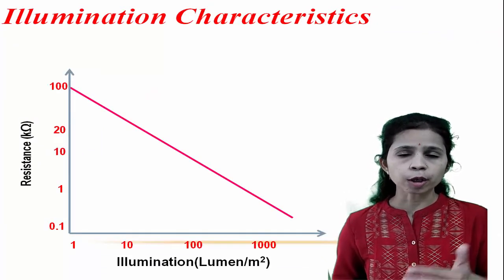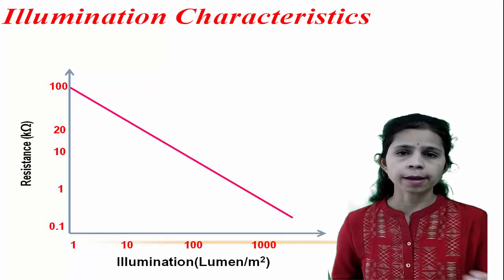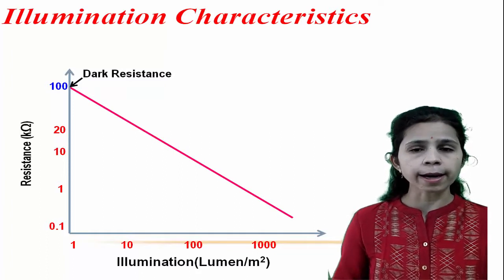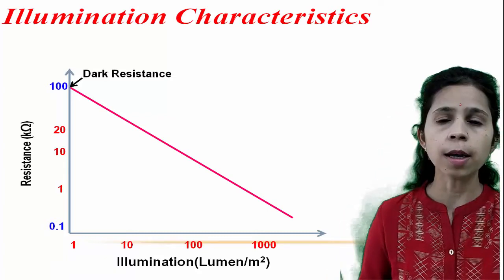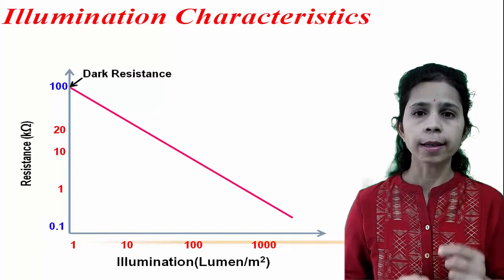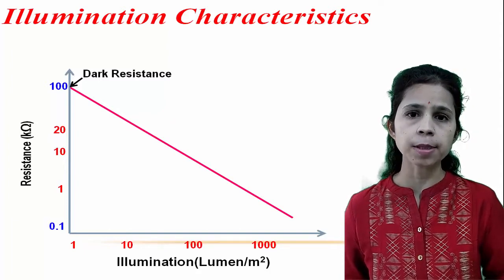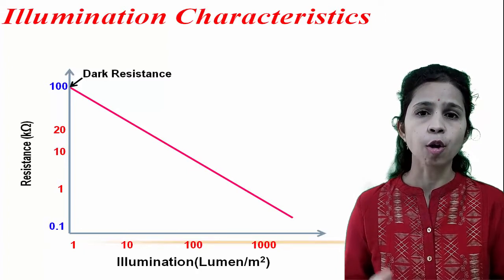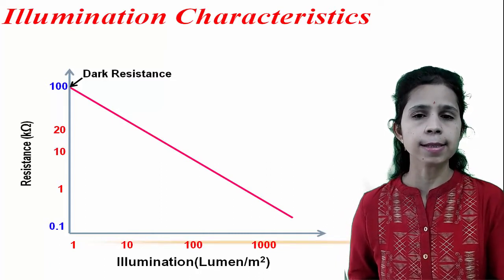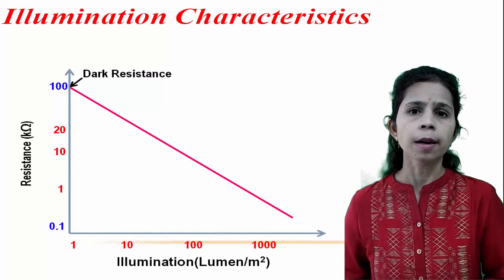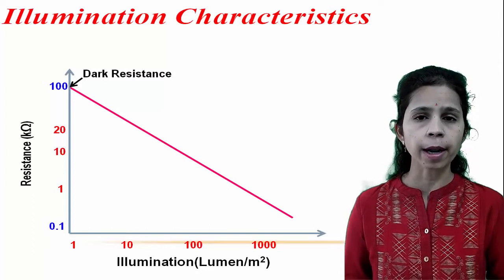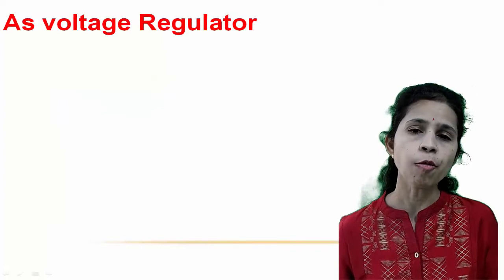The illumination characteristics show that when no light falls on the photocell, it has a dark resistance higher than 100 kilohms. When illuminated, the resistance can drop to only a few hundred ohms. The spectral response of a cadmium sulfide (CdS) cell is similar to the human eye and is sensitive to visible light. The cadmium selenide (CdSe) cell has spectral response at longer wavelengths extending into the far infrared region. Both CdS and CdSe cells respond slowly — CdS has a response time of 100 ms and CdSe has 10 ms.